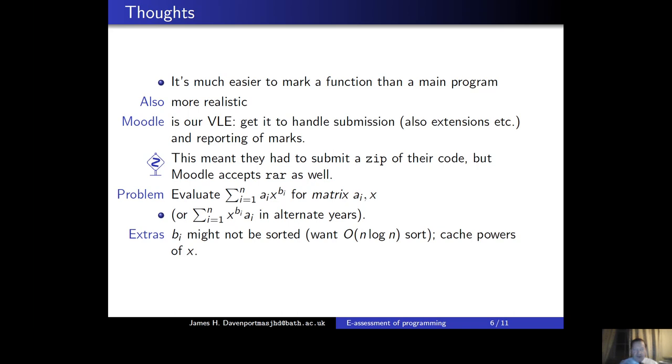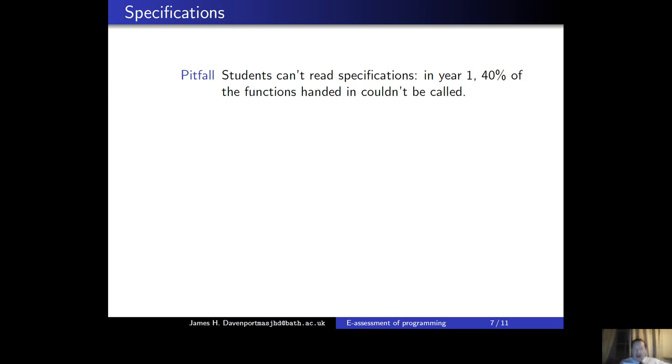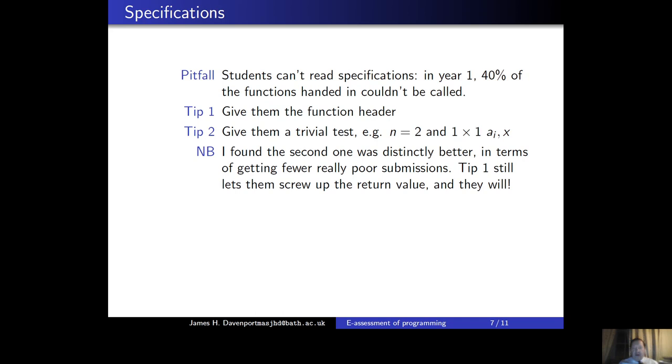My first pitfall was that students can't read specifications. However much you try, however much when you get the tutors to debug them, the tutors say yes and you make their solutions, they all read it and so on. They're used to it. First year students are not. And in year one, the first time I ran this, 40% of the functions being handed in could not actually be called. Basically, MATLAB just couldn't find the function of the right name and the right number of arguments. My first idea was I would give them the function header. Second idea was to actually give them a trivial test of the form I was going to use, exactly of the form I was going to use. Typical class, for example, n could be two, I could use one by one matrices, and so on. In fact, I strongly recommend tip two in terms of getting, I got many fewer poor submissions with tip two earlier than tip one. So I got to tip three in year, tip two in year three. Tip one, still let's screw up return value and they will.